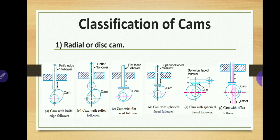Next we will see the classification of cams. Though cams are classified in many ways, we will see only the important types as per our syllabus. The first type is the radial or disc cam. In radial cams, the follower reciprocates or oscillates in a direction perpendicular to the cam axis. As you can observe in the figures, the axis of the follower is exactly perpendicular to the axis of the cam.